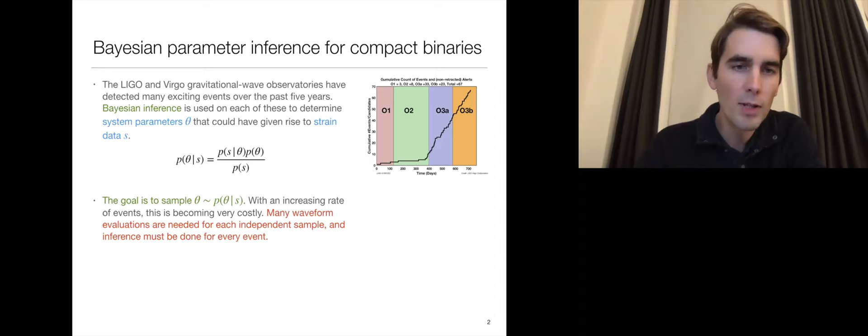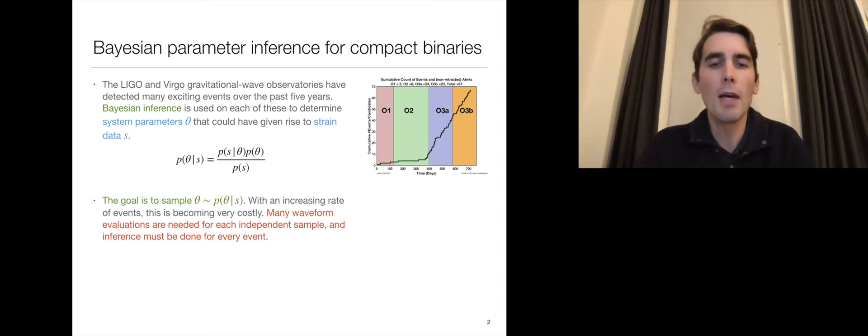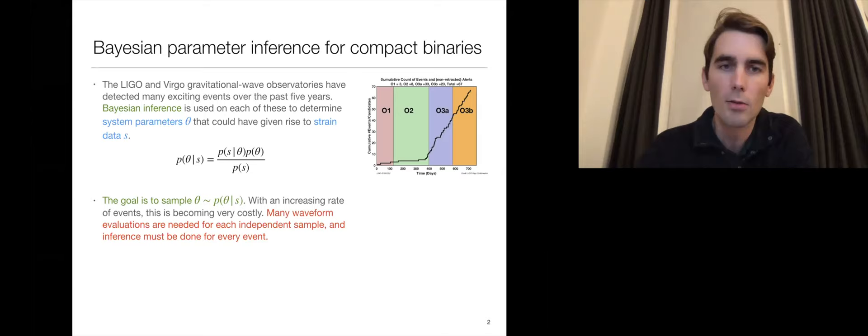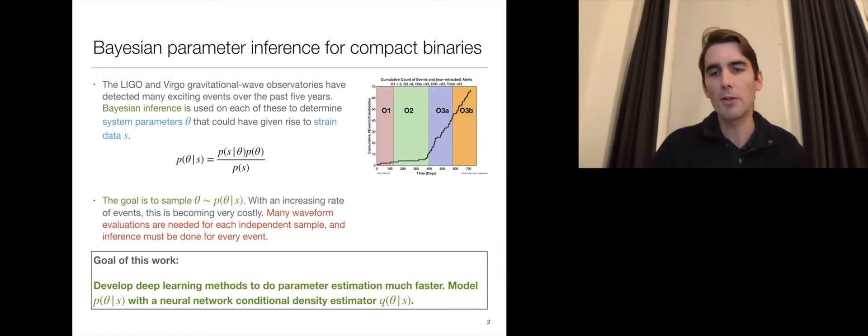However, this is fairly costly. And with an increasing rate of detections, this is becoming quite costly. This is because you need many waveform evaluations using this approach to get each independent sample and you have to do inference on many events. Moreover, with some events like binary neutron stars, you want to send a fast alert to astronomers to go look for these things. So the goal of this work is to develop deep learning methods to do parameter estimation much faster.